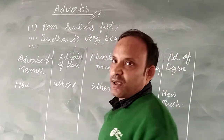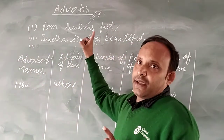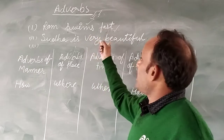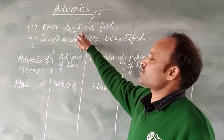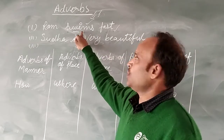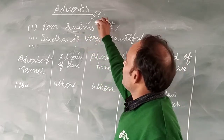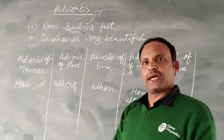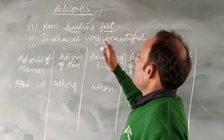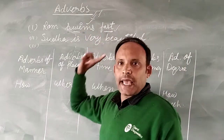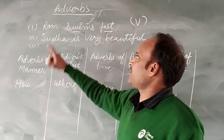That is the action. I have told you that adverb tells us about the verb. So in this sentence, what is the verb? The verb is 'swims.' So 'fast' is the adverb which describes the verb 'swims.' It means Ram swims in a fast manner.